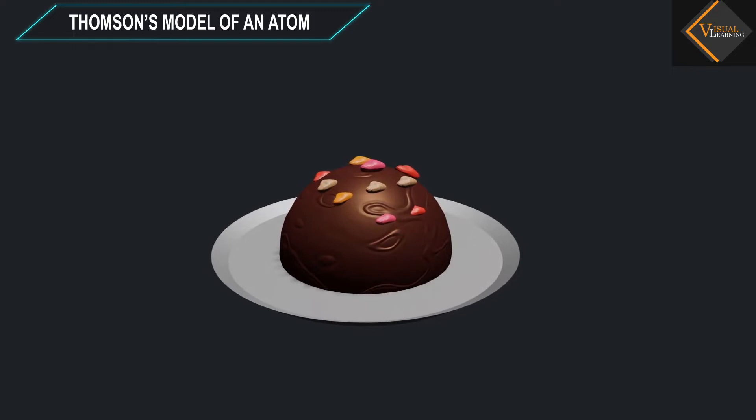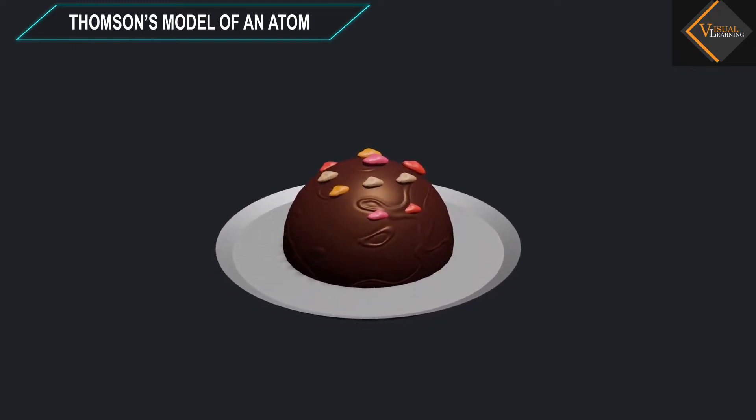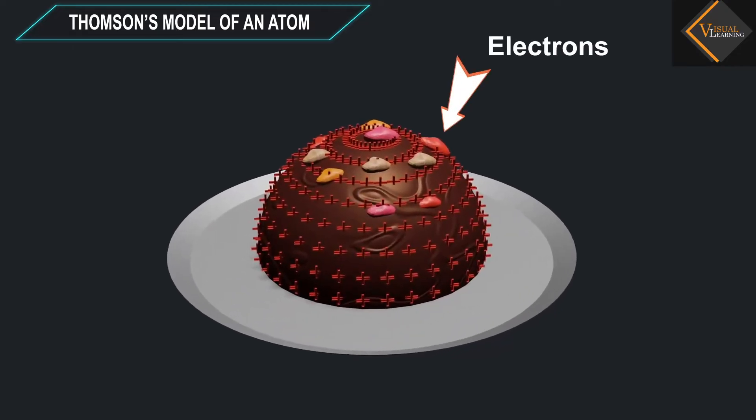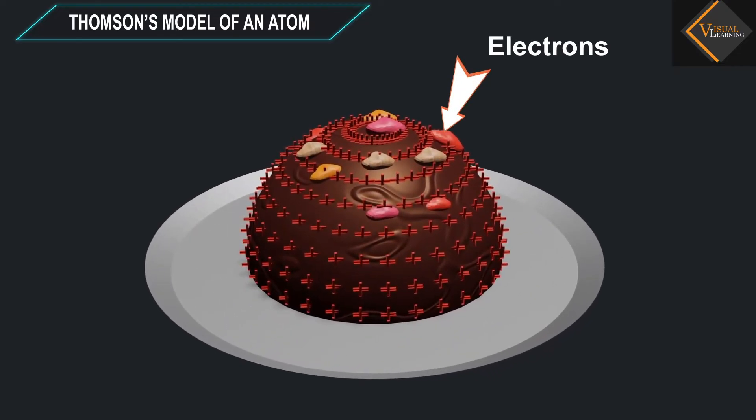Thomson proposed the model of an atom to be similar to that of a Christmas pudding. The electrons in a sphere of positive charge were like currants in a spherical Christmas pudding.